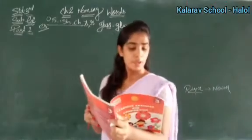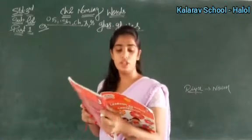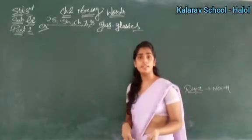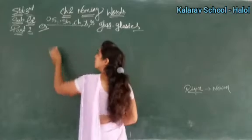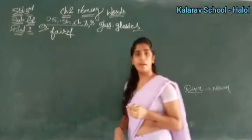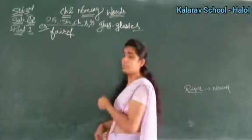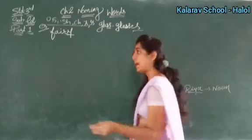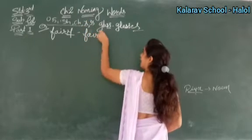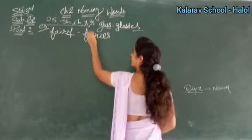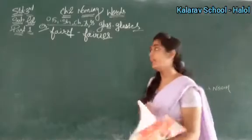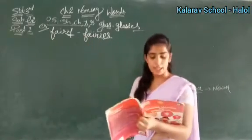Next rule: for nouns that end in Y, change Y to I and add ES. Ab jo bhi noun Y se end hota hai — jaise 'fairy' — Y se end hua, toh Y ki jagah I lagayenge aur last mein ES: F-A-I-R-I-E-S. Y ko remove kar denge, aur last mein ES — so fairy becomes fairies.